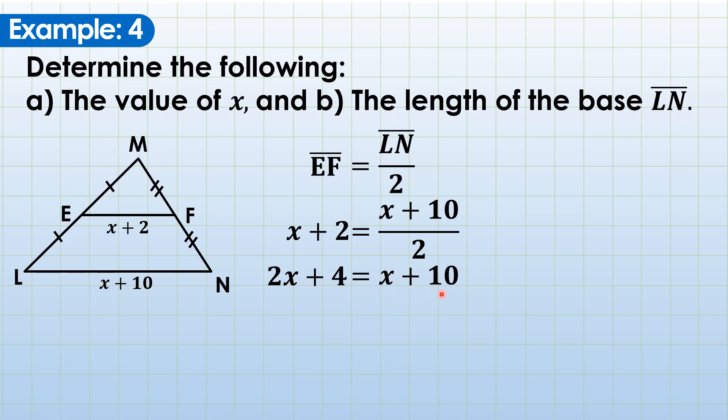2 times x is 2x, and then 2 times 2 is 4. So this becomes 2x plus 4. And then for the right side, this x plus 10 will be multiplied to 1. Next, this is a linear equation still. We're just going to combine linear terms on one side and constant terms on the other side. So this is 2x minus x. And then 4 will be transposed on the other side, that gives us 10 minus 4. Continue. 2x minus x is x, and 10 minus 4 is 6. So that's it, x must be 6.